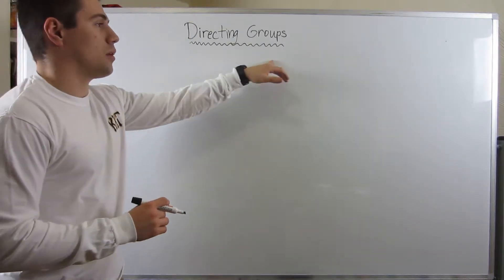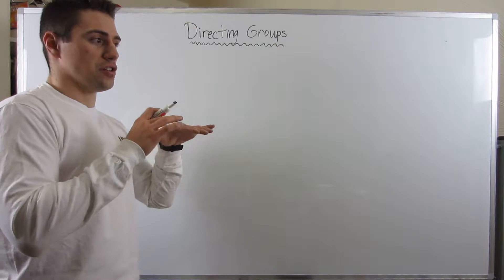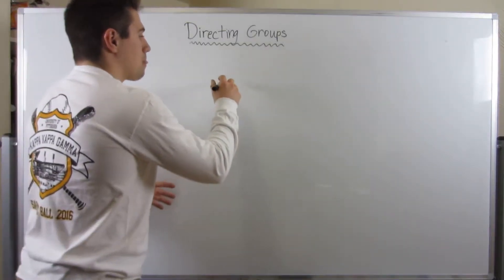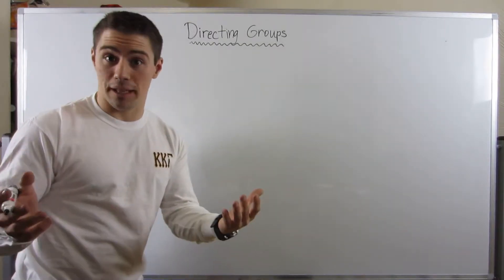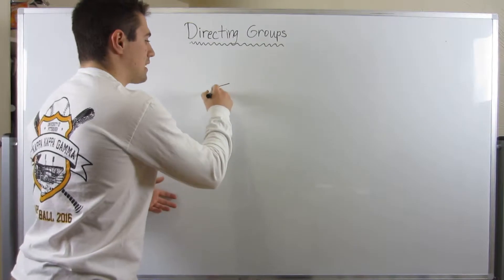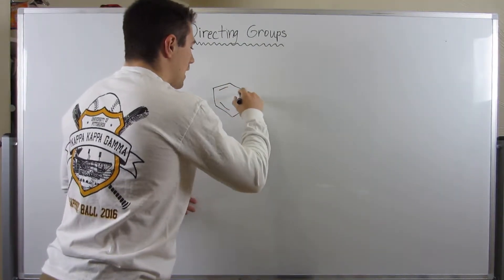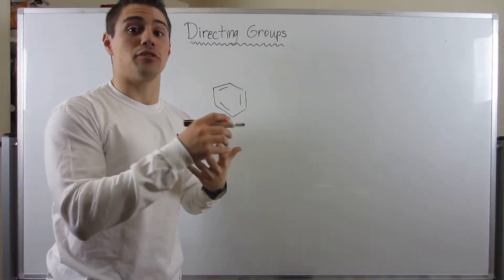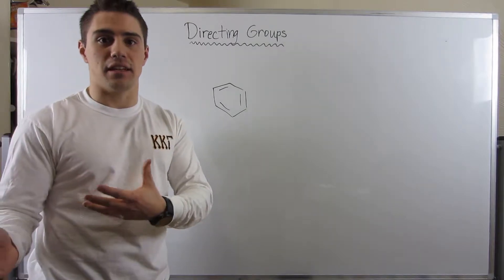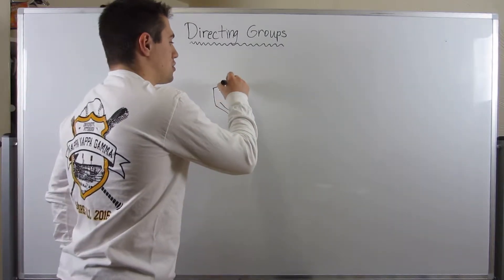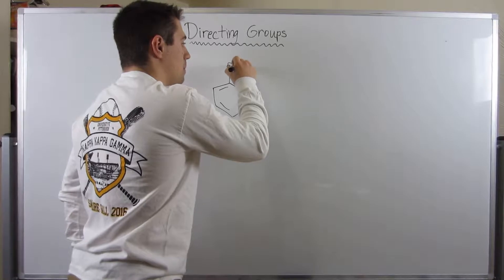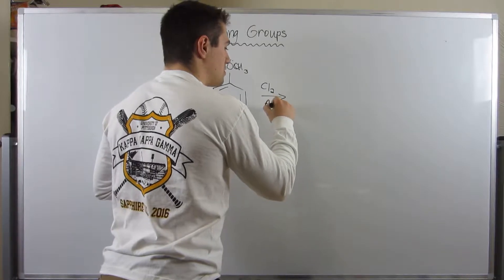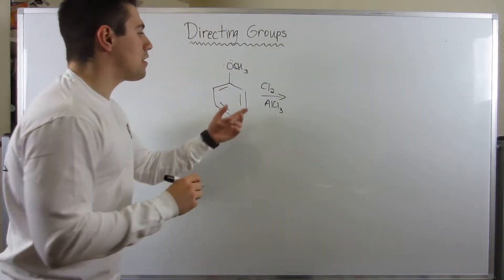Before we do that, I want to go over a topic called directing groups. All of the reactions we've done so far, we've had nothing on a benzene ring. That's not always going to be the case. I want to show you how having groups on a benzene ring before you use one of the reactions we've learned affects things. For example, if I have a methoxy group right here, and I'm going to chlorinate — Cl2, AlCl3 — where is this chlorine going to go?